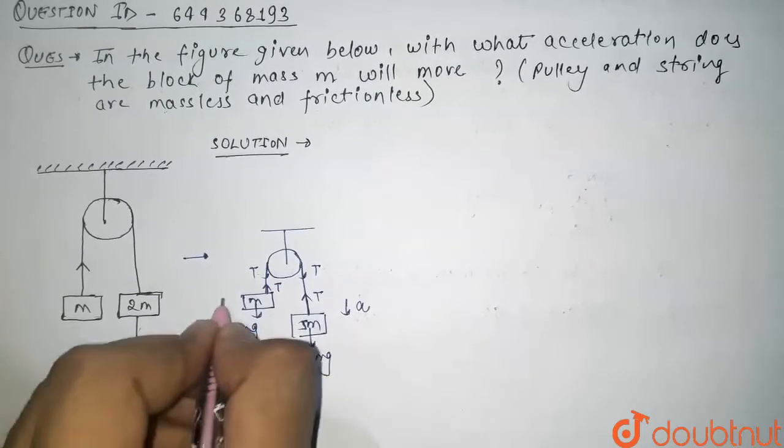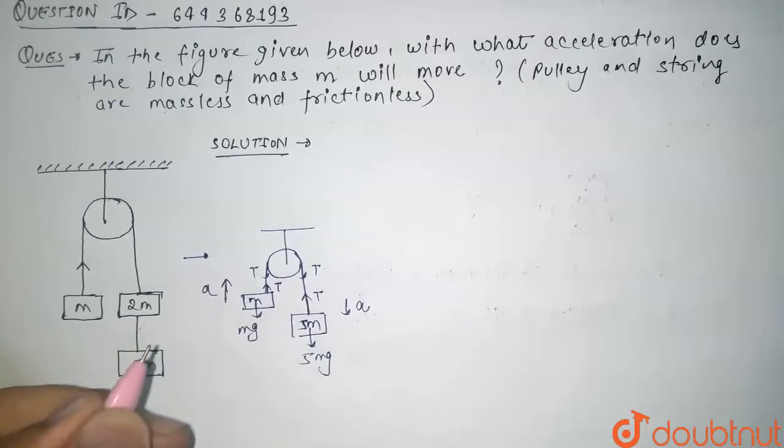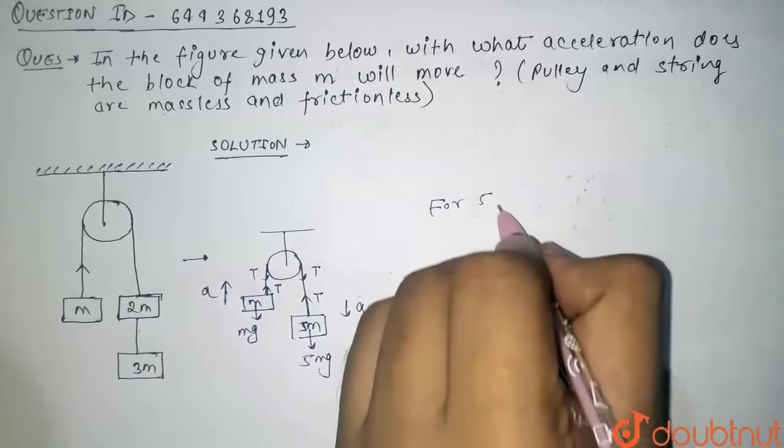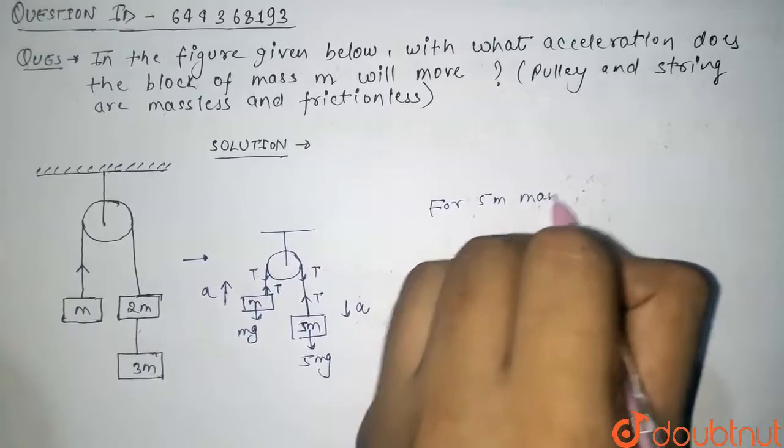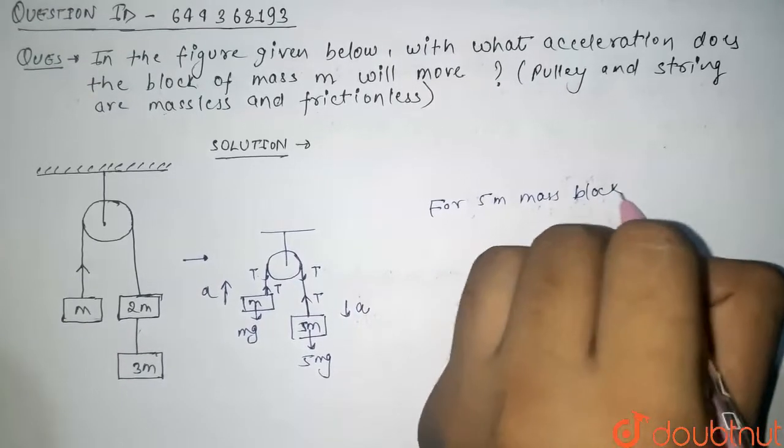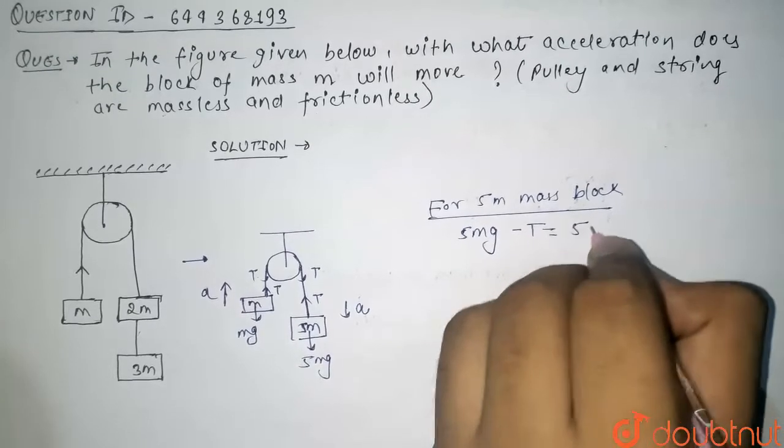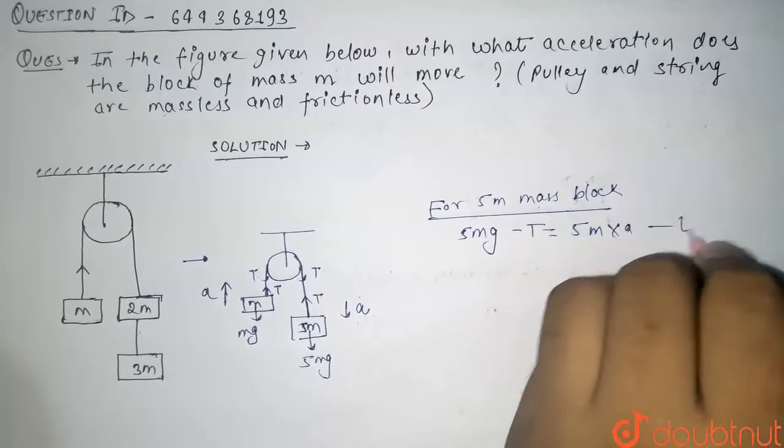Acceleration will be in downward direction, that is a, and its acceleration will be in upward direction. So from here, for 5m mass block, we can write it as 5mg minus tension is equal to 5m into a. This is our first equation.